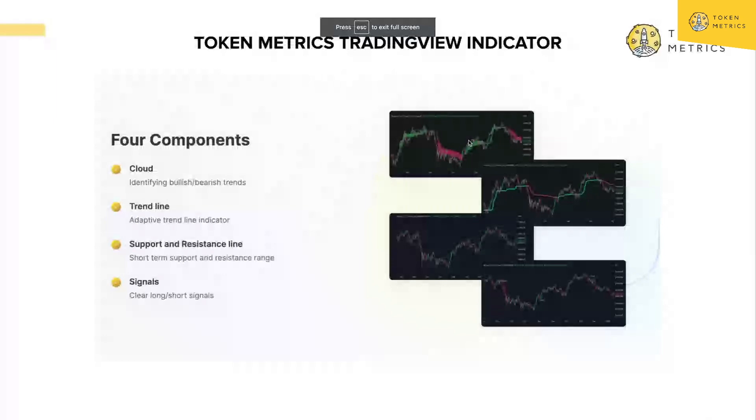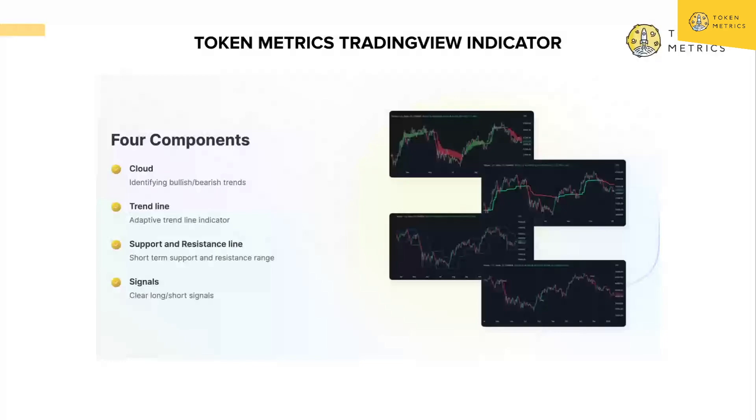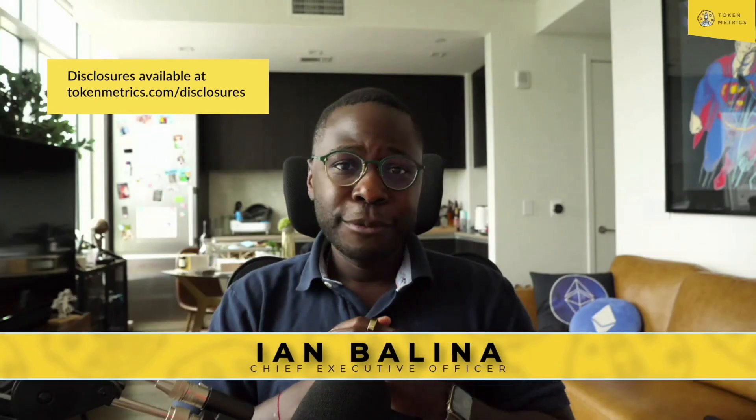The Token Metrics TradingView indicator has four components: first, clouds, which help you identify bullish and bearish trends; second, trend lines — an adaptive trend line indicator so you know the trend you're in; third, support and resistance lines, telling you when the asset is in a range or at support or resistance; and fourth, signals, which simplify things and say 'long,' 'short,' 'buy,' or 'sell.' The same signals available on the Token Metrics platform are now on TradingView. Note that TradingView doesn't allow external data for security reasons, so this indicator is quantitative-based rather than AI-based, using the same strategies built in Pine Script. Thank you for watching — get more content at Token Metrics using the link below.